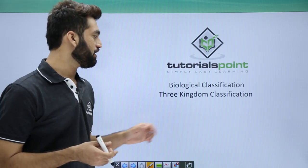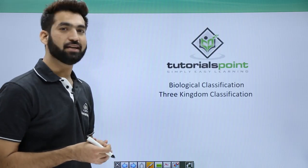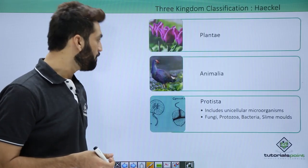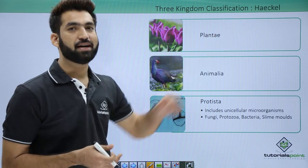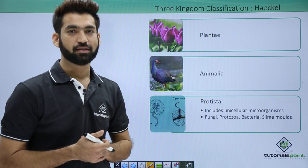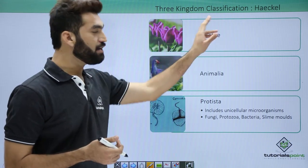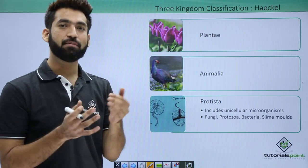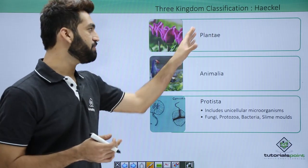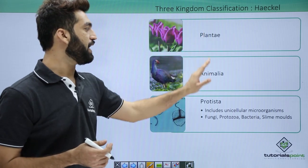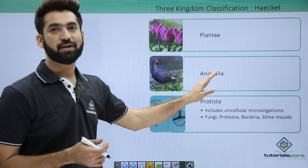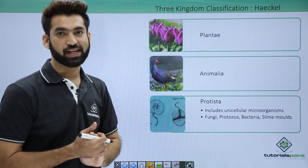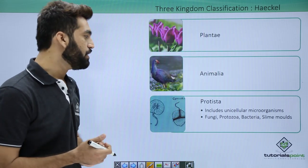In this session we'll be talking about the kingdom classification system which was given by Ernst Haeckel. Ernst Haeckel basically saw there were some odd organisms placed in plants and animals when he talked about the two kingdom classification system.